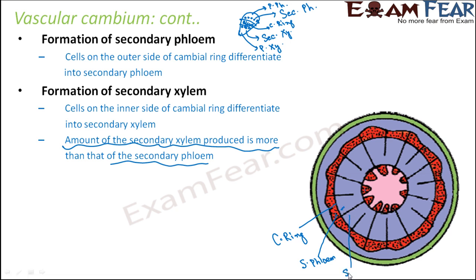You can see that the amount of secondary xylem is much greater, whereas the amount of secondary phloem is only small. Also importantly, some cells form rays — these are called secondary medullary rays. At some places the cambium forms a narrow band of parenchyma cells that pass through secondary xylem and secondary phloem in a radial direction. These parenchyma cells are known as secondary medullary rays.